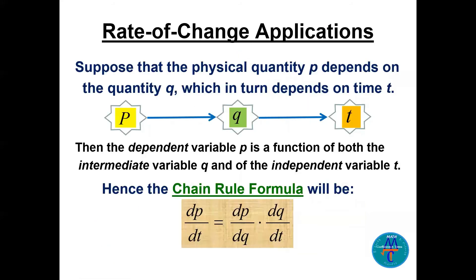Now let's look at applications of the chain rule. If a physical quantity p depends on quantity q, which in turn depends on time t, then dp/dt = dp/dq times dq/dt. This is the chain rule applied to related rates.